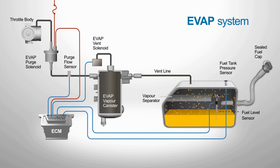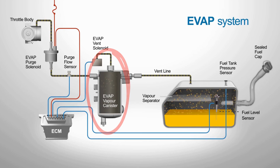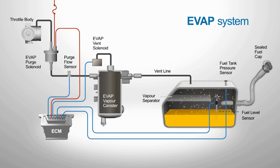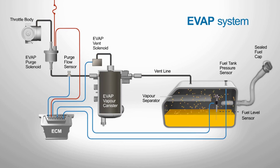When the engine is off, fuel vapors are stored in the charcoal canister instead of being released into the atmosphere. Once the engine is running and the conditions are right, the purge valve opens. This allows those stored vapors to flow into the engine, where they're burned during the normal combustion process.